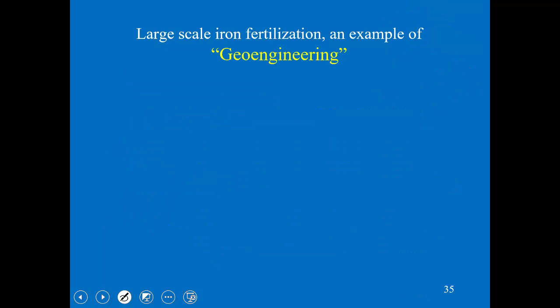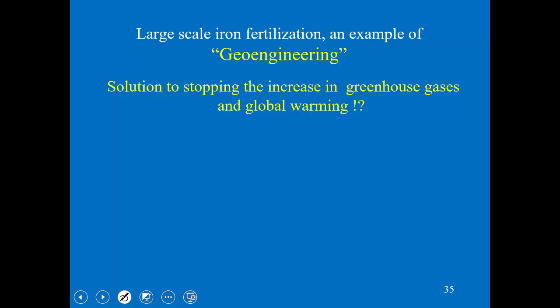That leads to thoughts about: if you can stimulate a phytoplankton bloom by adding iron, what about doing it on a really big scale? Remember in HNLC regions the biological pump is not working as well as it could in terms of drawing down CO2 — it has all these nutrients but not enough iron. The thing about iron is that unlike adding other nutrients, you don't need a lot of it. Some calculations suggested that relatively small amounts of iron could be added to HNLC regions to get some drawdown of CO2. This idea of large-scale fertilization is sometimes called geoengineering.